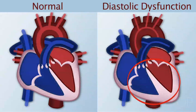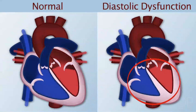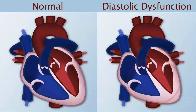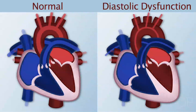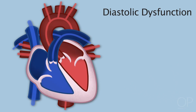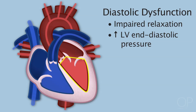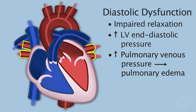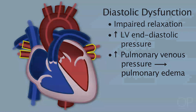Diastolic dysfunction is slightly different and a bit more difficult to manage because there aren't many drugs available to treat it. There's impaired relaxation of the heart — an inability to accept blood volume — increased left ventricular end-diastolic pressures, which result in increased pulmonary venous pressures and subsequent respiratory and hemodynamic effects.